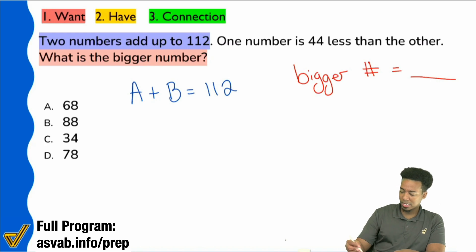Now if we look at that next sentence here, it says one number is 44 less than the other. Okay.